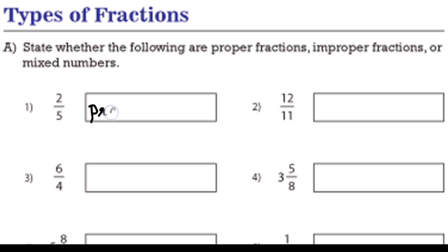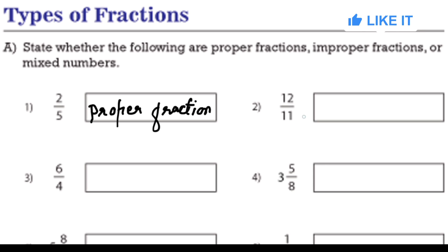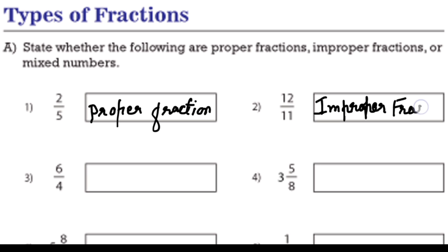The first fraction is 2 by 5 — a proper fraction because the numerator is smaller than the denominator. Question 2 is 12 by 11; the numerator 12 is greater than the denominator, so it is an improper fraction. Question 3 is 6 by 4 — again the numerator is greater, so it is again an improper fraction.